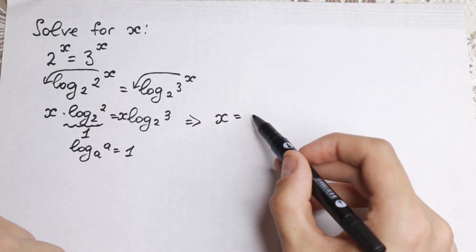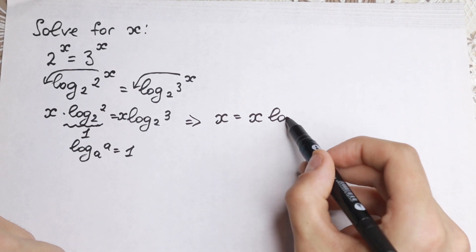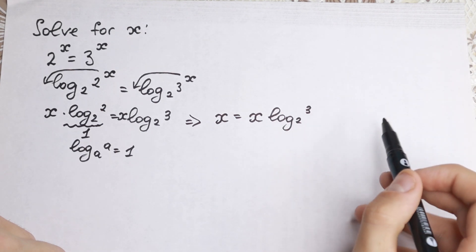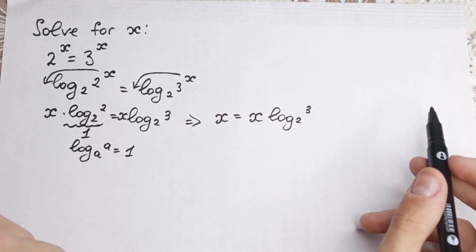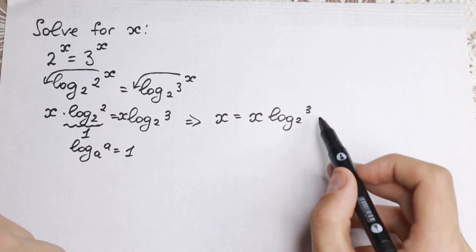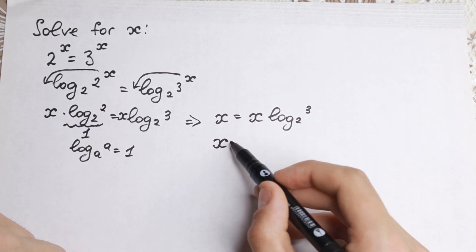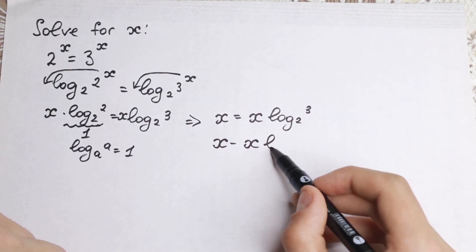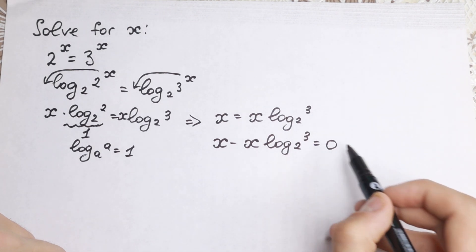We have that x equals x times log₂(3). How can we find our answer? Let's bring this to the left hand side. We have x minus x·log₂(3) equals 0.